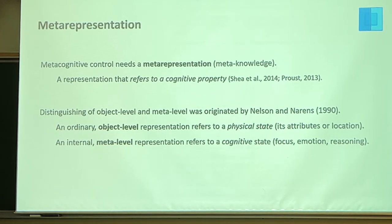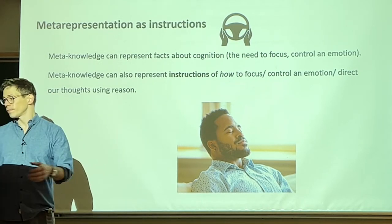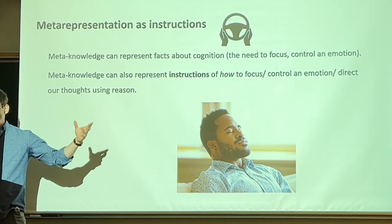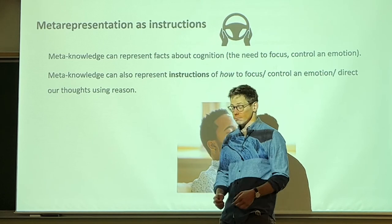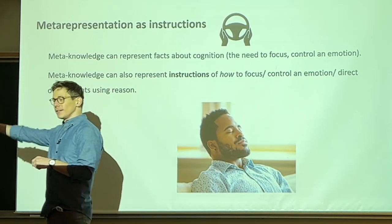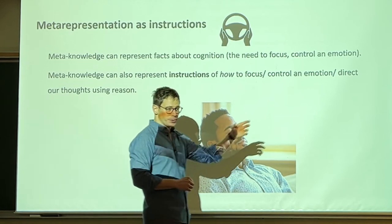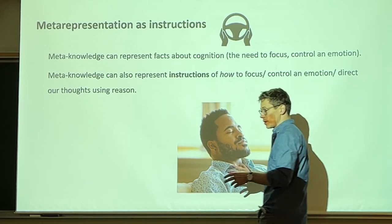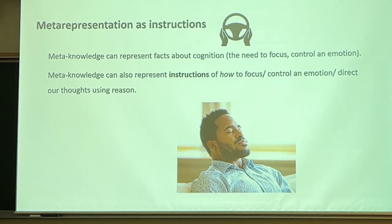Object-level representations refer to a physical or external state; meta-level representations refer to a cognitive state — like focus or emotion. They're declarative concepts about a different category of phenomena. We're putting words to our universal experience, creating a conceptual map for the landscape inside all of us. For the first time in history we're doing this explicitly. Meta-level instructions can give you conceptually clear understanding of what's happening inside you so you can direct your internal states positively. Meta-knowledge can represent facts about cognition — like needing to focus — or instructions: how to focus, how to control an emotion, how to build a memory palace. Instructions are where the gold is.